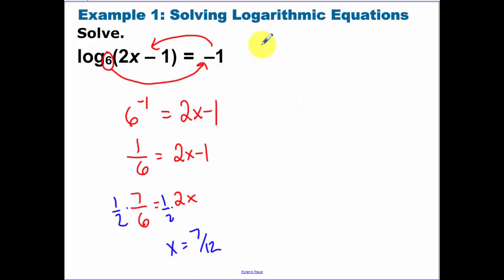Now you want to make sure you check that answer. So plug that answer back in. Log base 6 of 2x. So simplifying this, we get log base 6 of 7 sixths minus 1 equals negative 1.